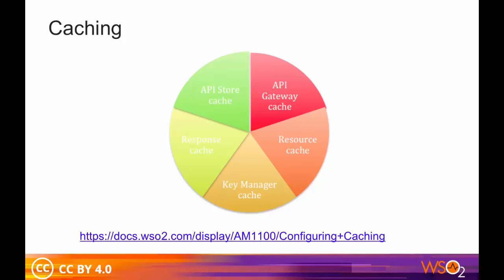There are a number of different types of caching used by API Manager: the API Gateway cache, which caches keys at the gateway; the Resource cache, which caches HTTP calls; the KeyManager cache, which caches keys at the KeyManager; the Response cache, which caches backend responses; and the API Store cache, which caches the store content, for example, the last five APIs.